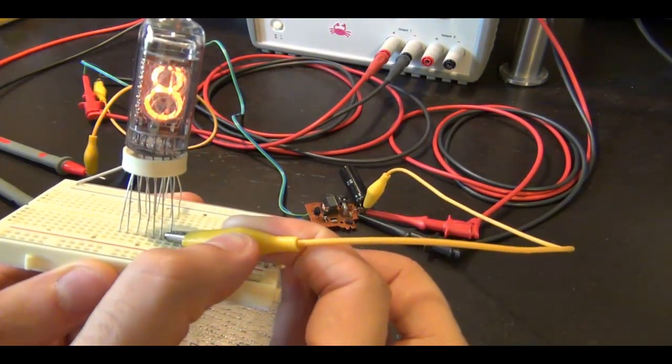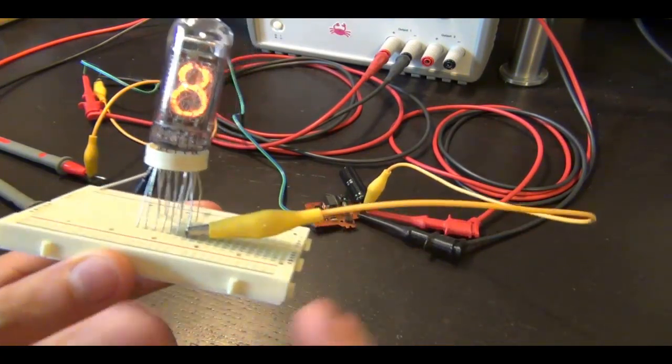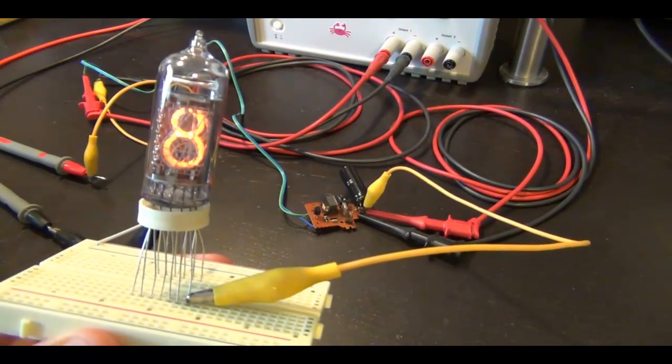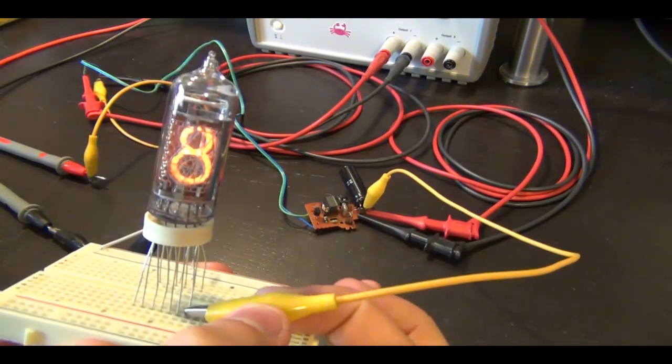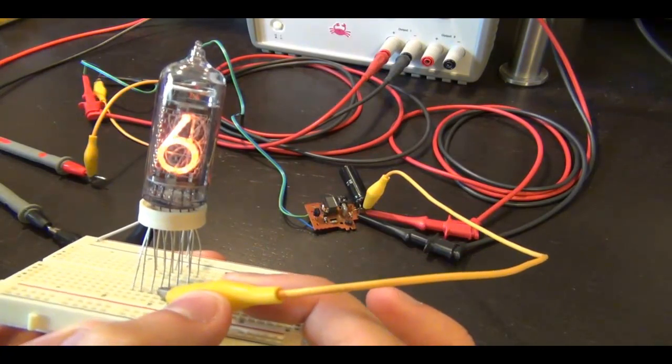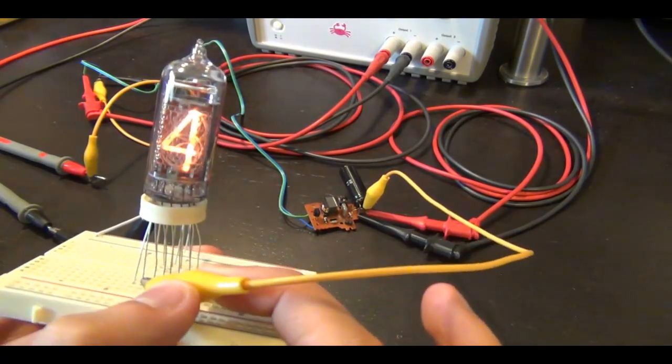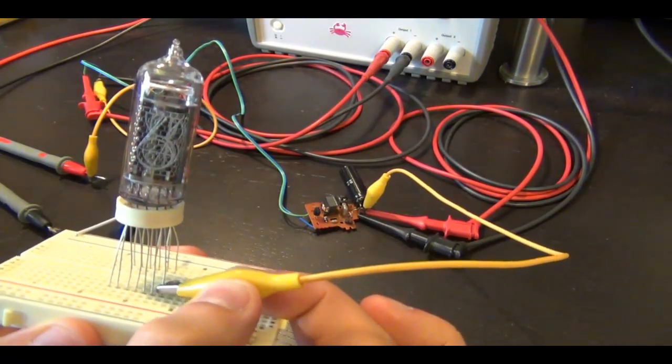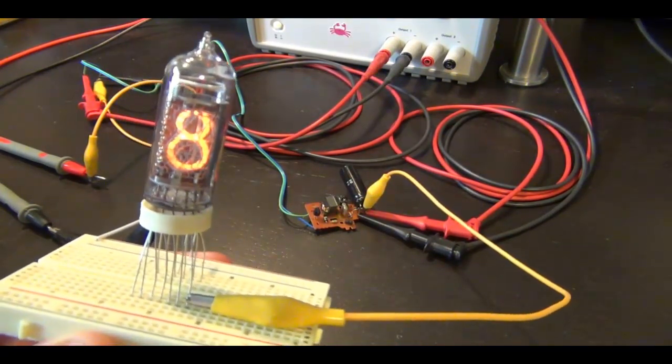So, let's connect it back to number 8. So, the thing that makes these Nixie tubes really cool is the fact that the numbers are not all on the same plane. So, it gives it this weird 3D look. As I go across the numbers, the numbers go back and forth. And I think that's a really cool retro look that you could incorporate in one of your future projects.